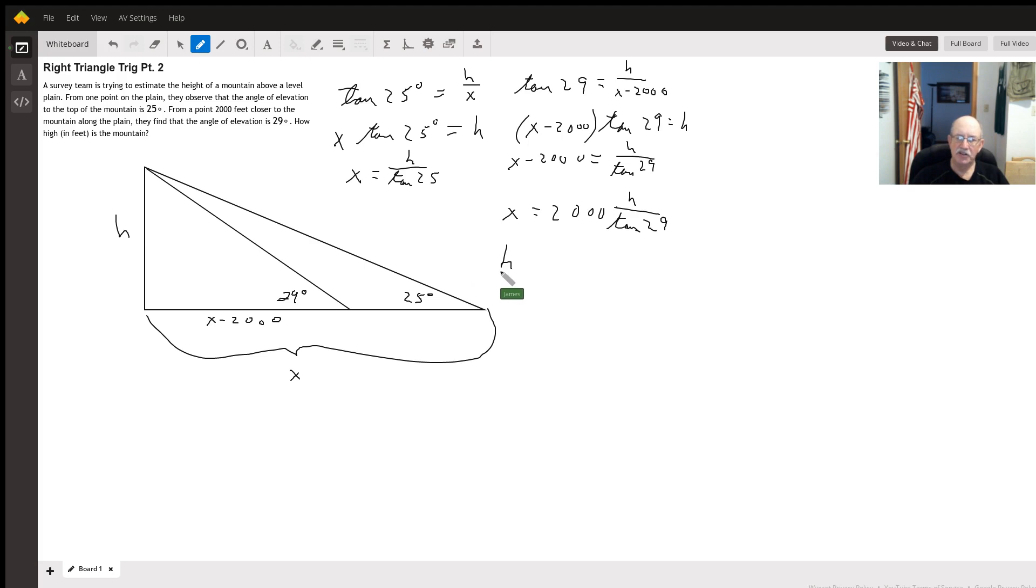I get h over tangent of 25 equals 2,000 plus h over tangent of 29. So now, let's figure out what tangent of 25 is.